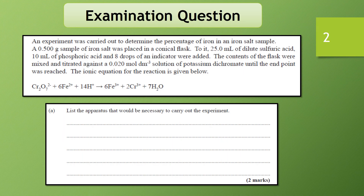Here is our examination question. We're told that an experiment is being carried out to determine the percentage of iron in an iron sample. A 0.5 gram sample of the iron salt is placed in a conical flask, 25 mL of dilute sulfuric acid is added to acidify the solution and ensure the iron remains in a particular oxidation state. 10 mL of phosphoric acid is added with drops of indicator, and that solution is titrated against 0.02 moles per dm³ of potassium dichromate until we get an endpoint. The ionic equation is given, so from the ionic equation we can look at that equation.